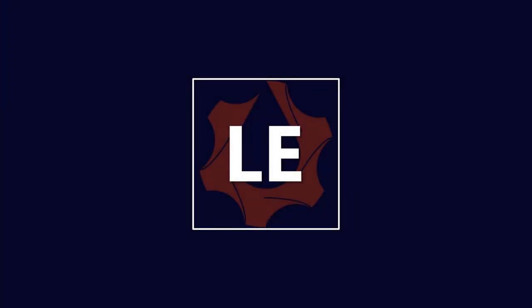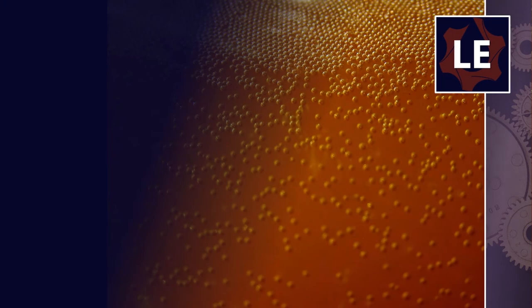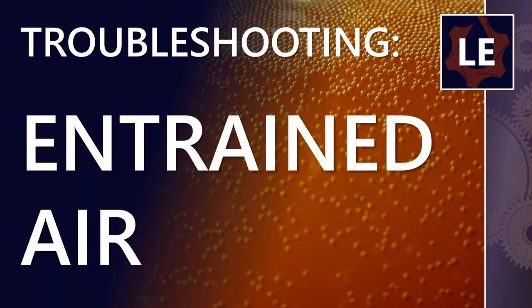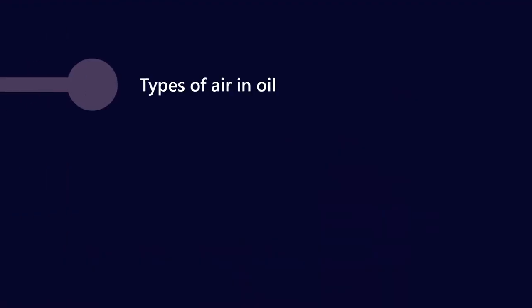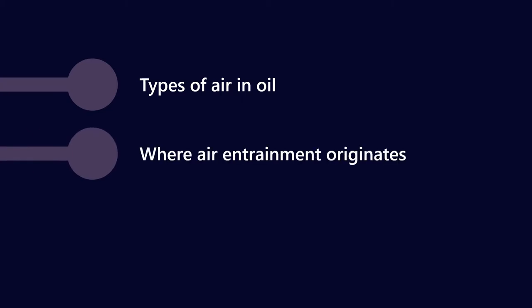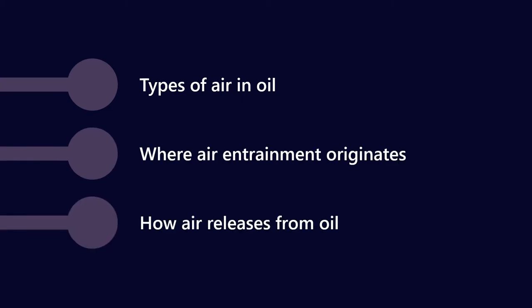G'day everyone, welcome to Lubrication Explained. In today's troubleshooting video we're going to talk about air entrainment. Specifically we'll talk about the types of air in oil, where air entrainment originates, and how air releases from oil. Putting all these three things together is going to give us a really good picture of where air entrainment comes from and what we can do to prevent it from happening in the first place.